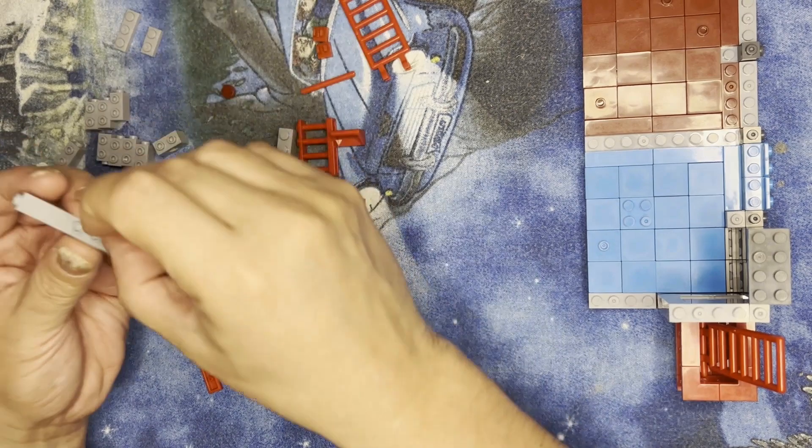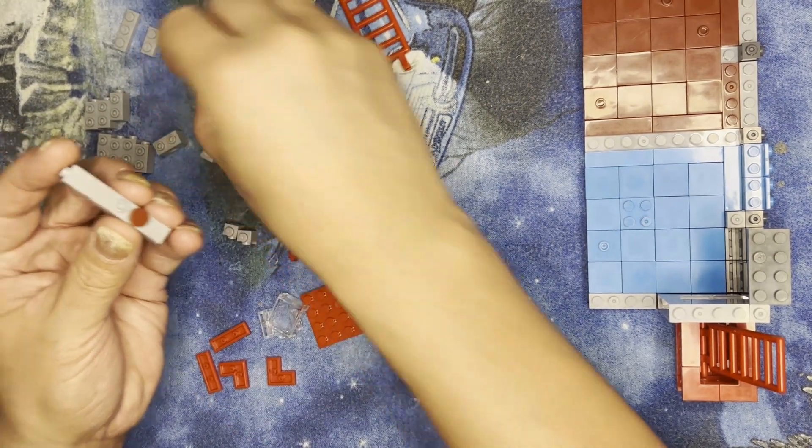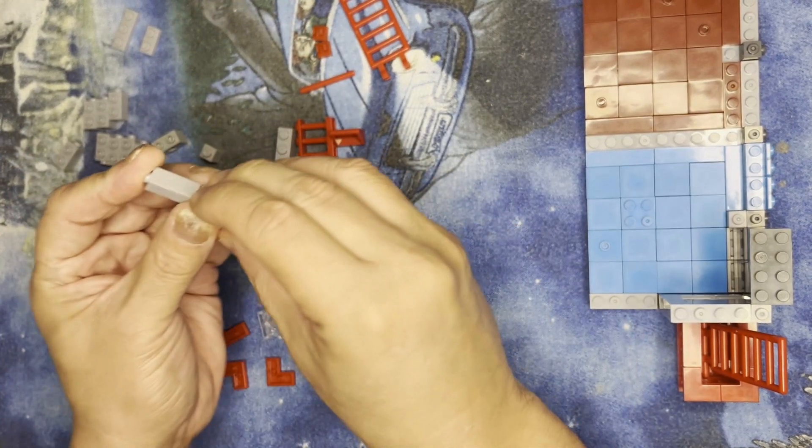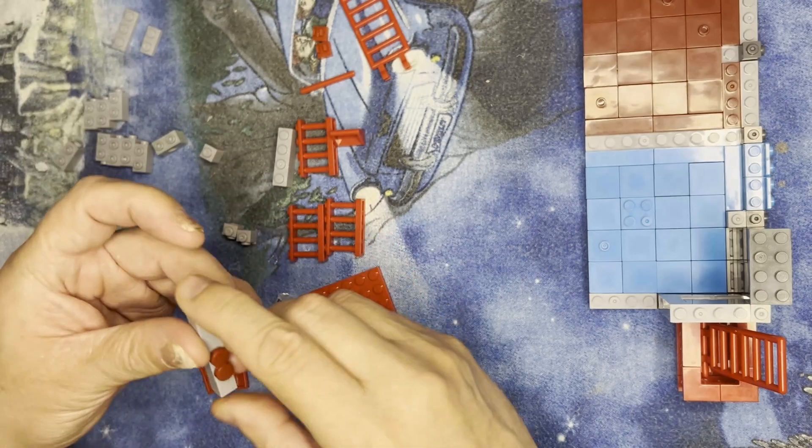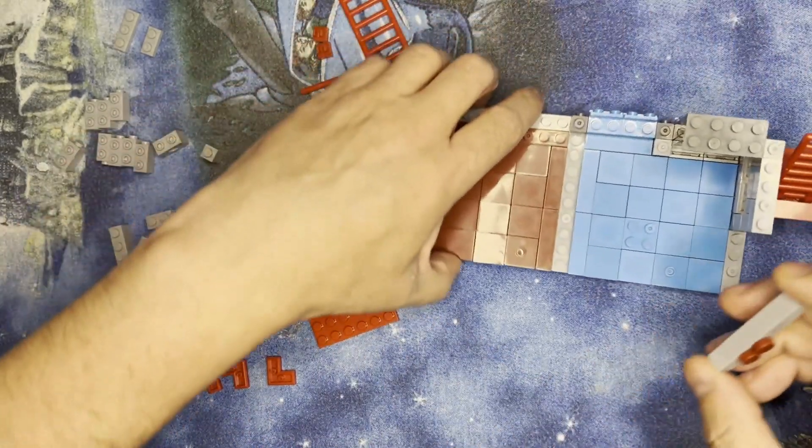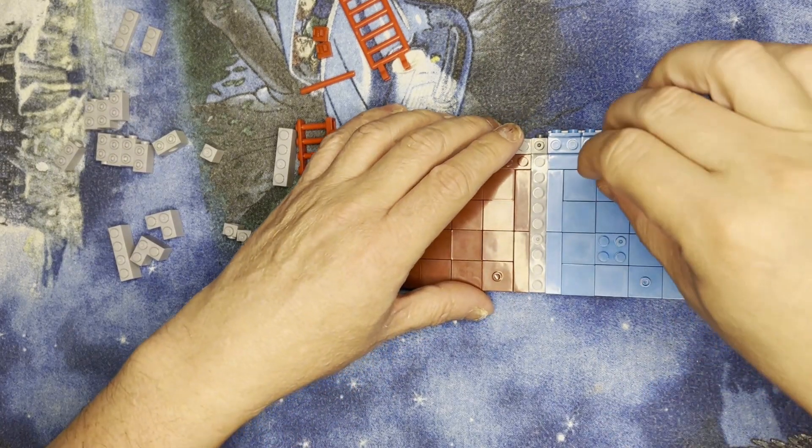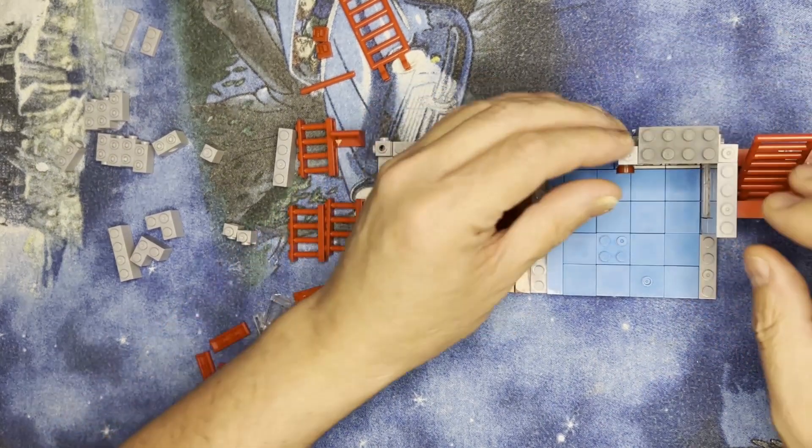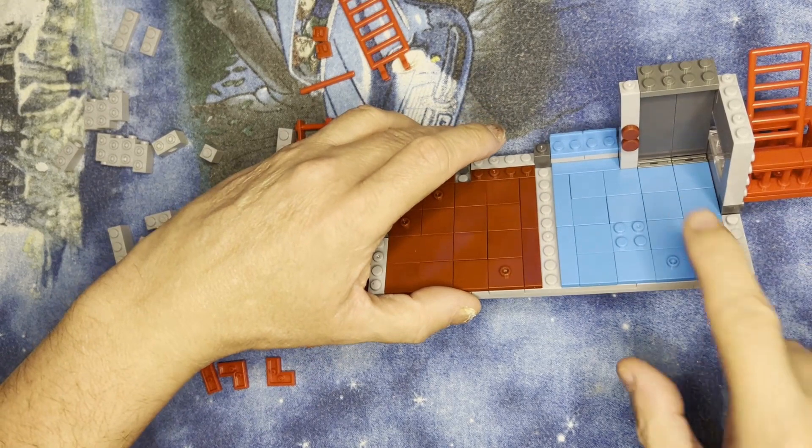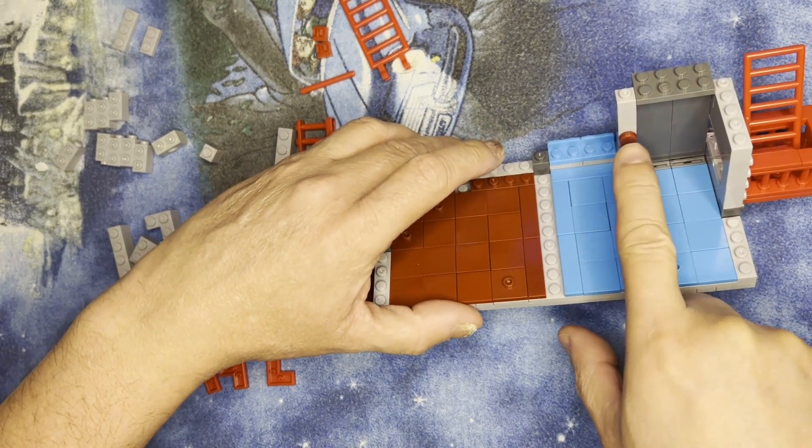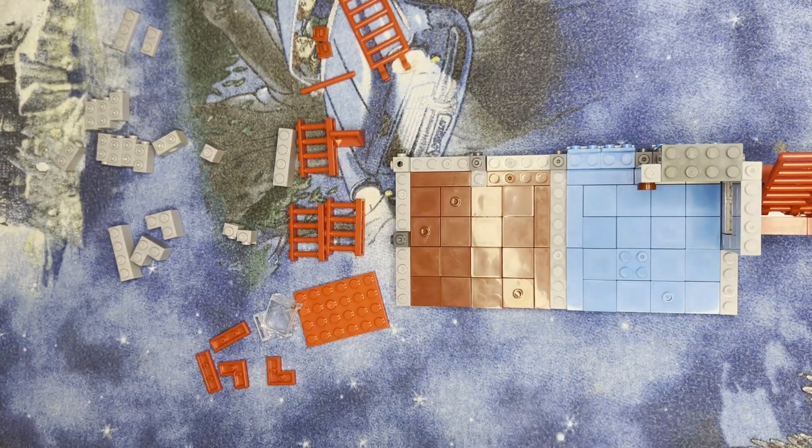Like that. Okay, put these two on like that, and this is gonna go right here like that. So you get elevator doors and you have the button for the elevator doors.